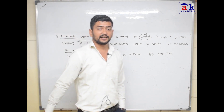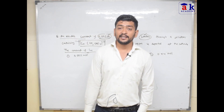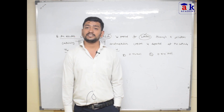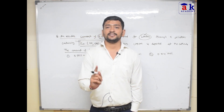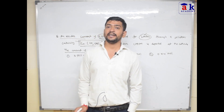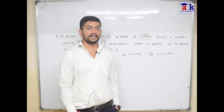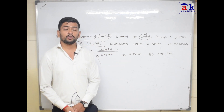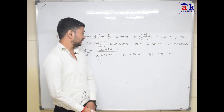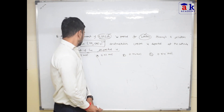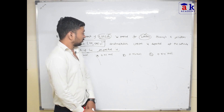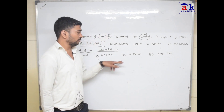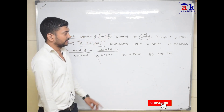यहाँ कहना चाहते हैं कि अगर हमने 0.965 Ampere का current 2000 seconds के लिए एक solution से pass किया जिसमें यह particular ion present है, तो copper का कितना copper deposit होगा — और quantity आपको mole में दी हुई है।